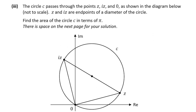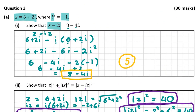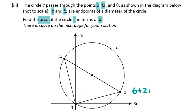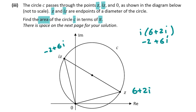Let's move on to part 3, which involves a circle based on complex numbers. A circle passes through the points z, iz, and zero, with z and iz as endpoints of a diameter. We're asked to find the area of the circle in terms of pi. So z is 6 plus 2i and iz was i multiplied by 6 plus 2i, which we found to be minus 2 plus 6i.